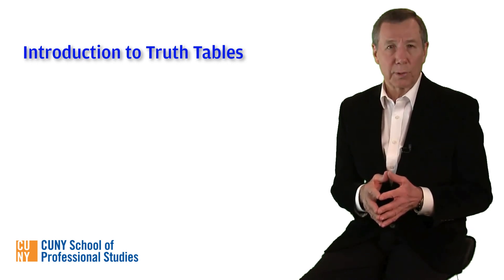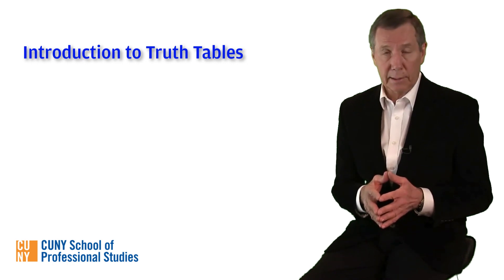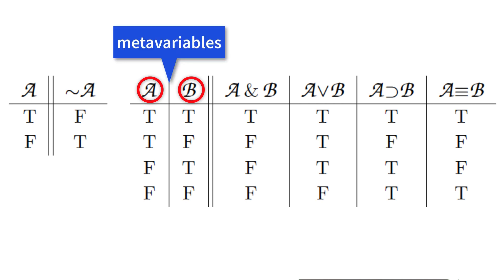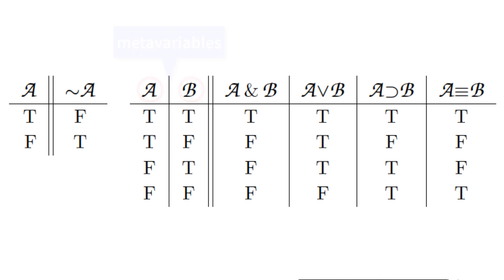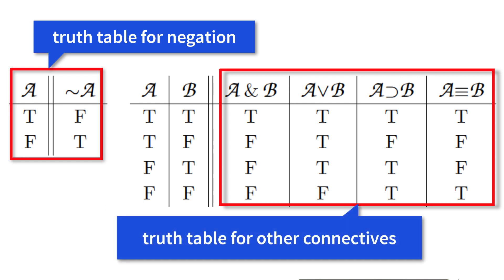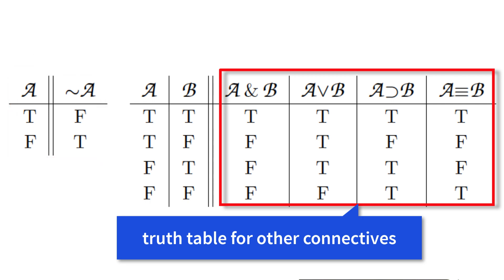We've already looked at the individual truth tables for our five sentential connectives, but here they are compressed for review purposes in this master table. The script letters A and B in the header row stand for metavariables — that is, any variable whatsoever. On the far left is the truth table for negation, and on the right is the truth table for the other four connectives. The truth table for negation is shorter because there is only one variable, A, which can either be true or false.